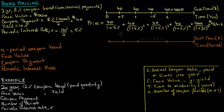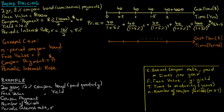So we can see that the price of a coupon bearing bond is just the present value of the cash flows associated with that bond. Let's consider a more general case. Suppose we have an N-period coupon bond with face value equal to F. At the end of each period, the bond makes a coupon payment of A dollars, and let the periodic interest rate be denoted by R.